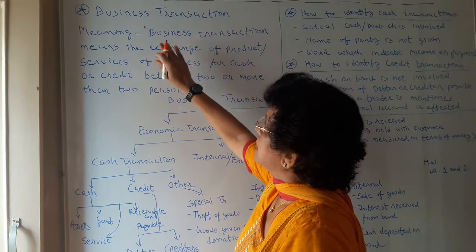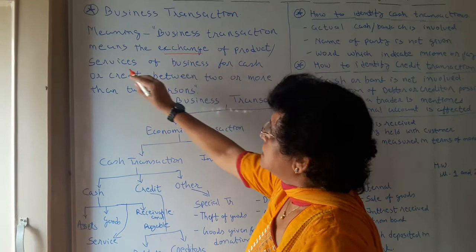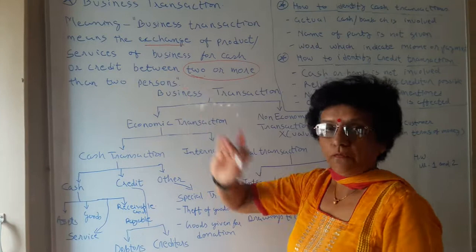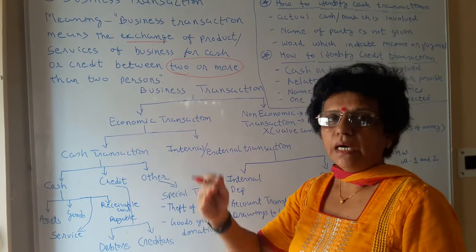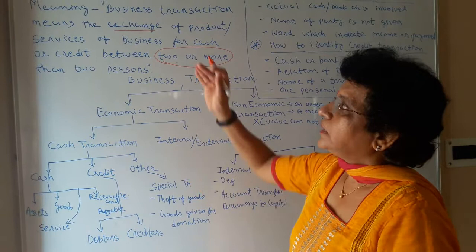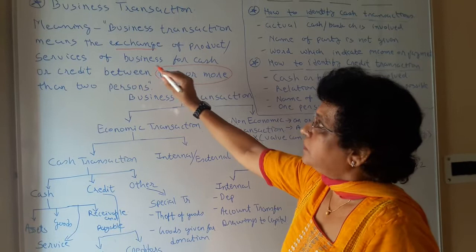A business transaction means the exchange of product or service of the business for cash or credit between two or more than two persons. You are transacting for the goods, for the item, for the service. On one hand you are giving the product or service, on the other hand you are getting cash. Whatever exchange took place between two parties — the two persons — is most important. That event is to be called a business transaction.